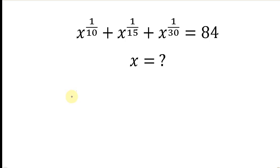What's going on everybody? Welcome back to my YouTube channel. Let's solve this math question that says: find the value of x for which x to the 1 over 10 plus x to the 1 over 15 plus x to the 1 over 30 is equal to 84.